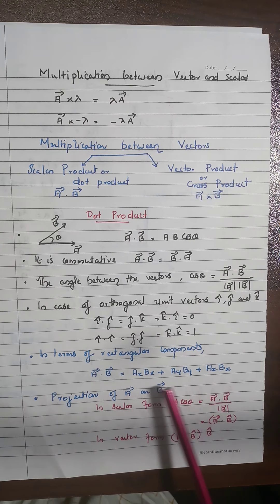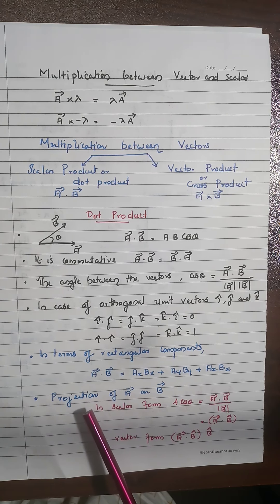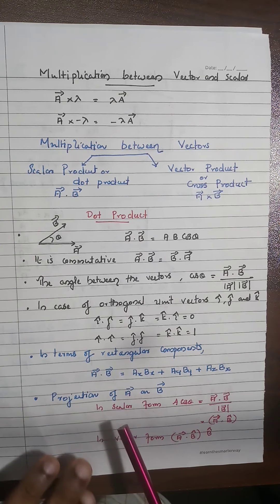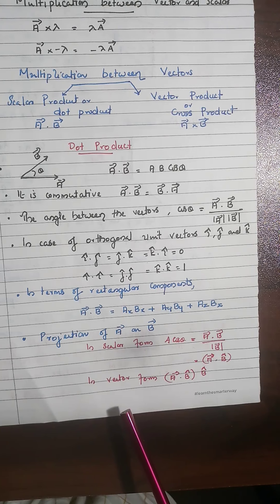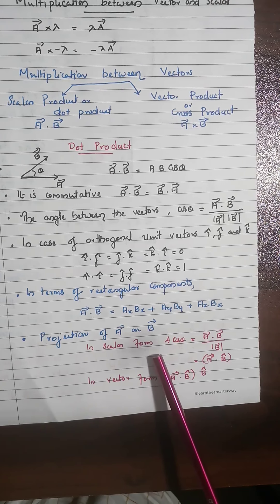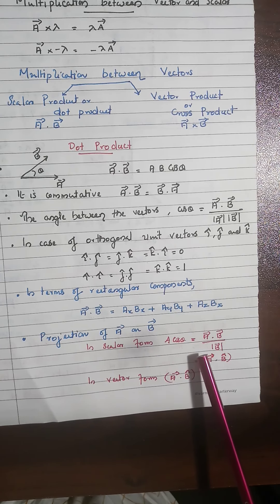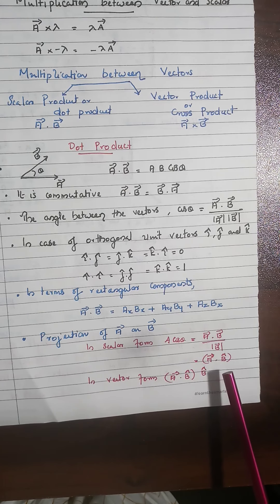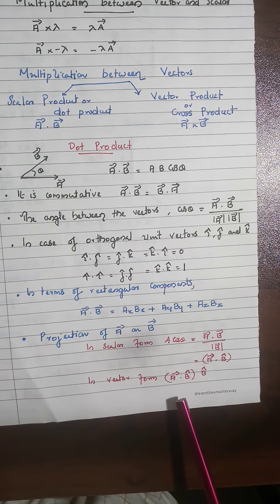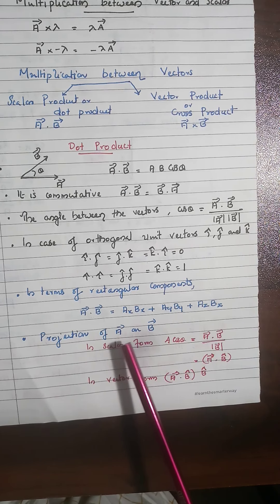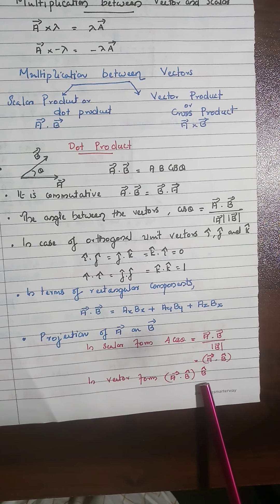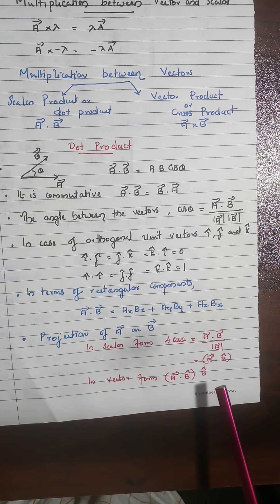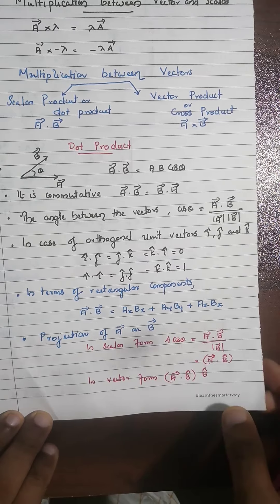You should revise the geometrical meaning of the dot product: how to find the component of one vector along another, or the projection of vector A on B. In scalar form, it is A cosθ = (A·B) / |B| = A·B̂. In vector form, the component of A along B is (A·B̂) B̂.